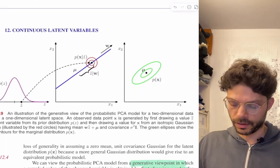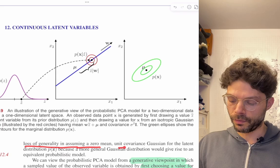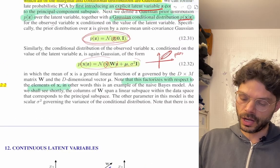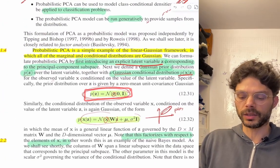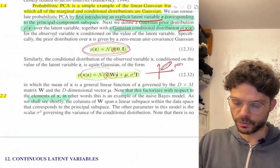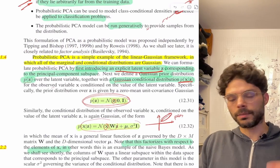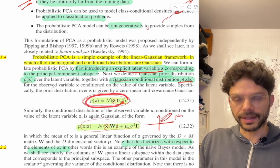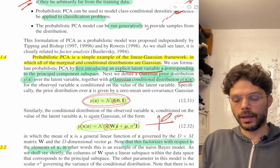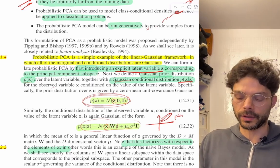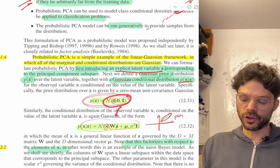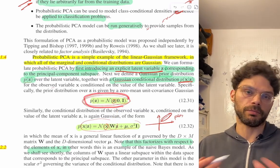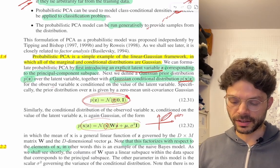There is no loss of generality in assuming a zero-mean unit-covariance Gaussian for the latent variable distribution, because a more general Gaussian distribution would give rise to an equivalent probabilistic model. If you had some mean and some arbitrary covariance for the latent, you could actually fold those into W and into mu and still end up using a latent variable that was zero-mean with unit covariance. Essentially any structure you add to the latent prior you could move into the observation model, so you might as well keep the latent variable distribution as simple as possible.